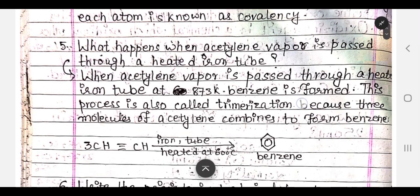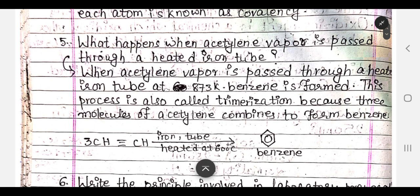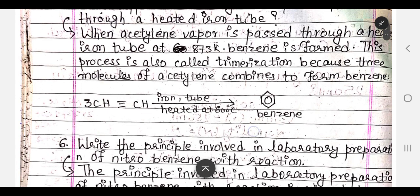The next question: What happens when acetylene vapor is passed through a heated iron tube? This is a question from organic chemistry. When acetylene is passed through a heated copper tube at 873 Kelvin, benzene is formed.